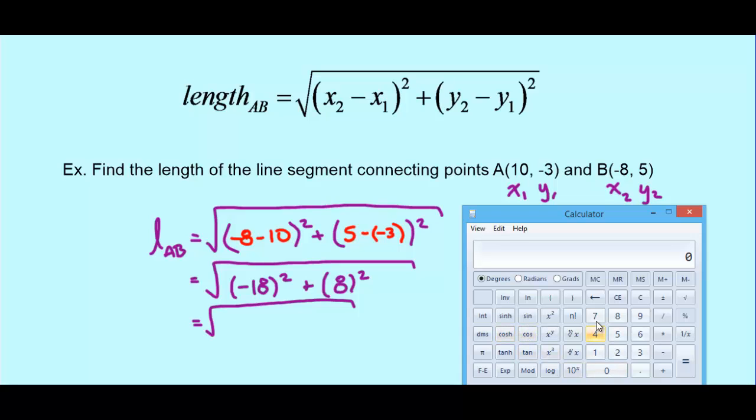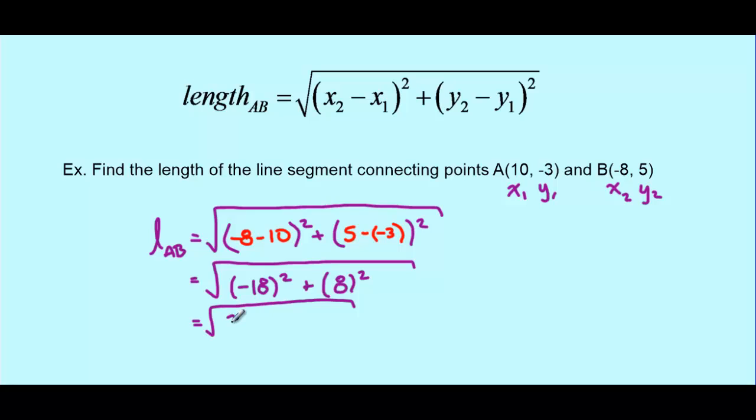Negative 18 is a tough number to square. So what we're going to do is we're going to put it into our calculator here. And then when we square it, we get 324. So 324 is negative 18 squared. 8 squared is a bit easier. That's 64. And so we'll add those two numbers together. 324 plus 64 is 388.